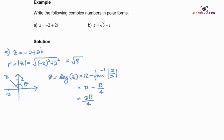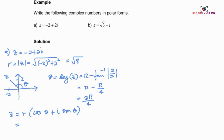So the value of the argument is 3 pi over 4. Then we substitute the values of R and theta into the polar form: Z equals R(cos theta plus i sin theta), giving Z equals the square root of 8 times (cos 3pi/4 plus i sin 3pi/4).